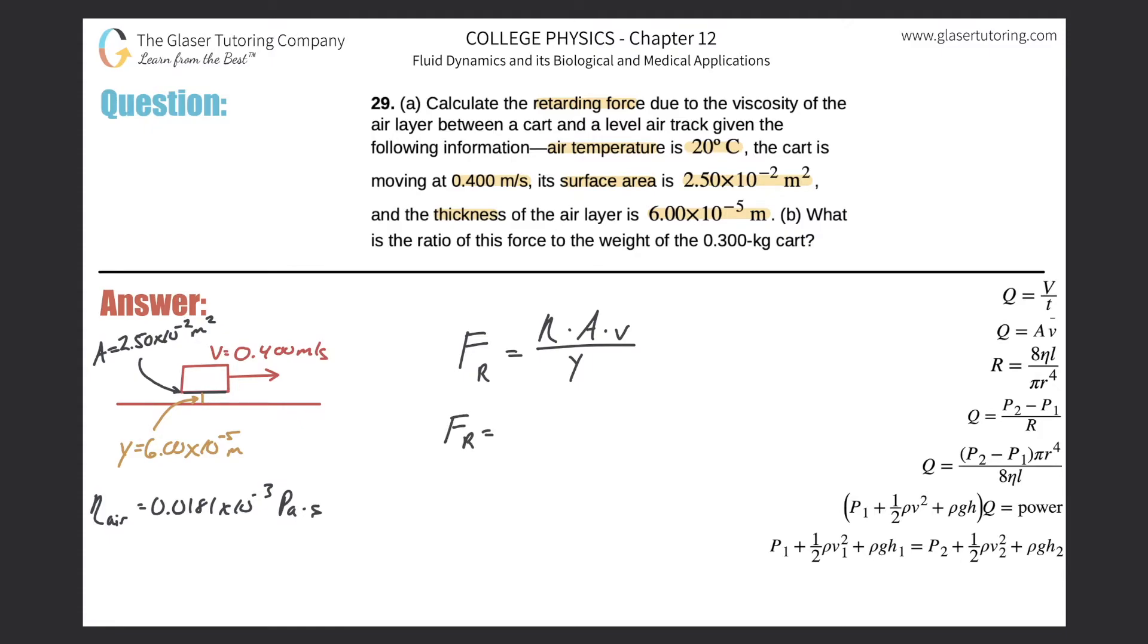So really, all we need to do here is just plug in the values. The viscosity here is going to be 0.181 × 10^-3, the surface area was 2.50 × 10^-2, the velocity was 0.4 meters per second,